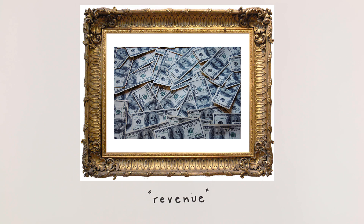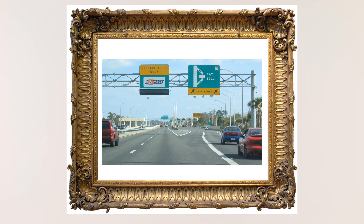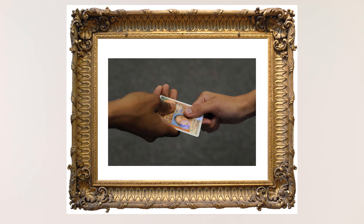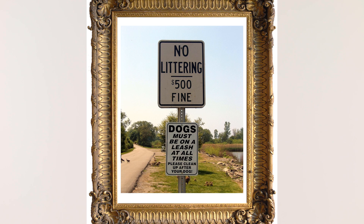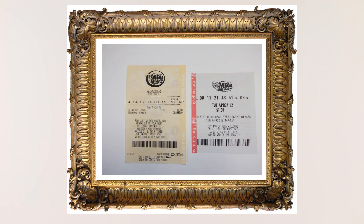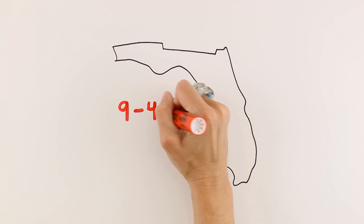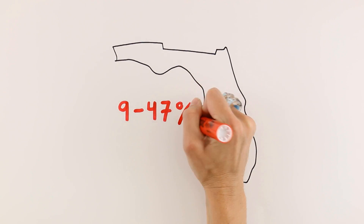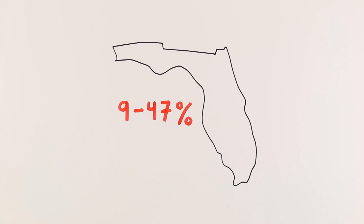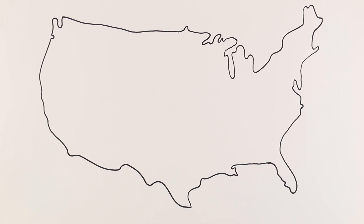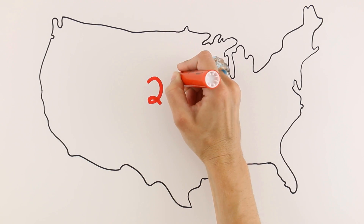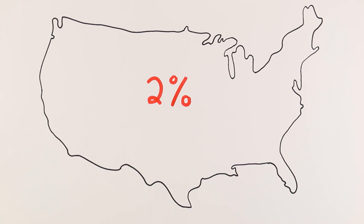The government also raises revenue by charging tolls to use certain roads and fees for things like driver's licenses. Fines for things like littering also raise money for the government, as do state lotteries. State and local governments raise anywhere from 9% to 47% of their revenue from non-tax sources like these. However, the federal government gets less than 2% of its revenue from these sources.